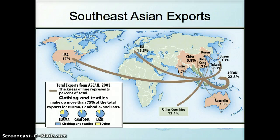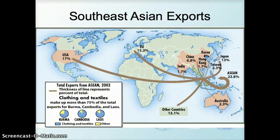Looking at exports, a lot of Southeast Asia's exports are based around clothing and textiles. More than 75% of total exports for Burma, Cambodia, and Laos are clothing and textiles. A lot of these go into the Asian region — to places like Japan — as well as a lot to the European Union and a lot to the United States.